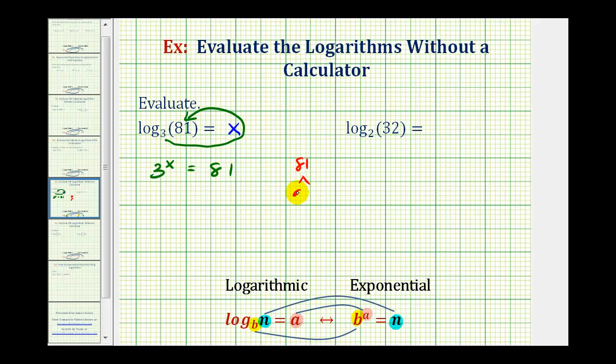81 is equal to 9 times 9, and 9 is equal to 3 times 3. So 81 is equal to 3 to the fourth. So now we have 3 to the x equals 3 to the fourth.